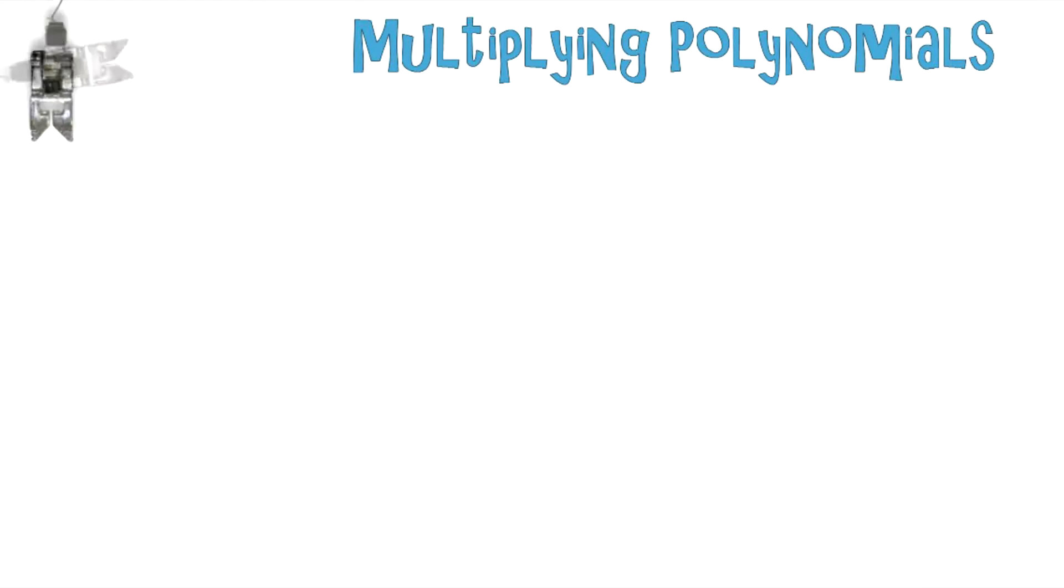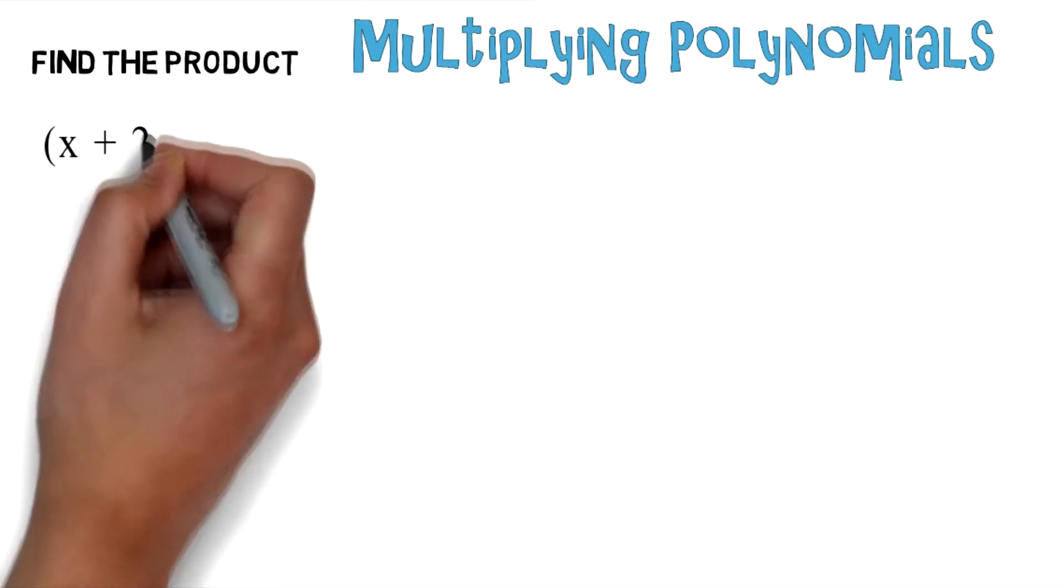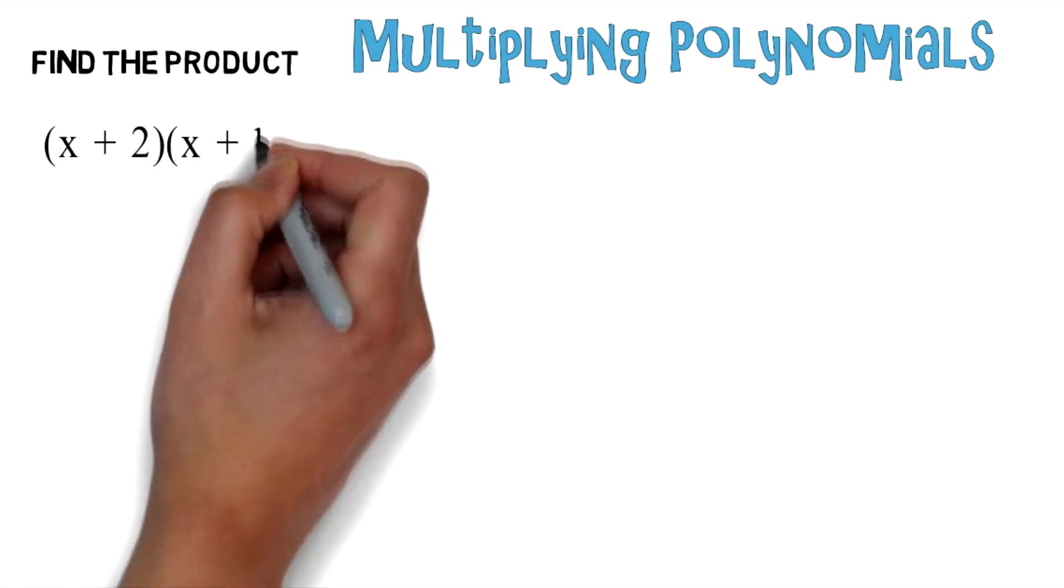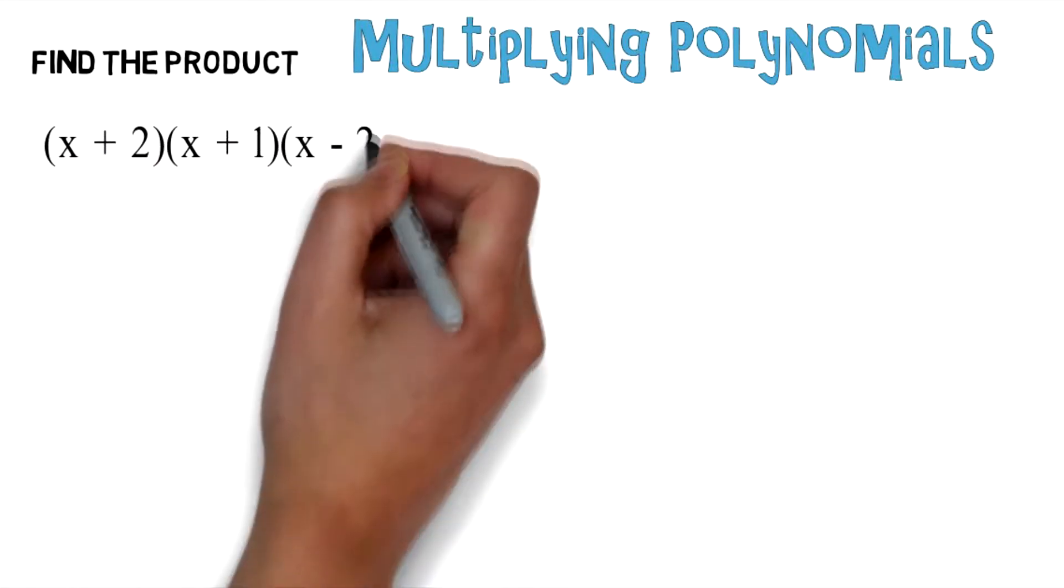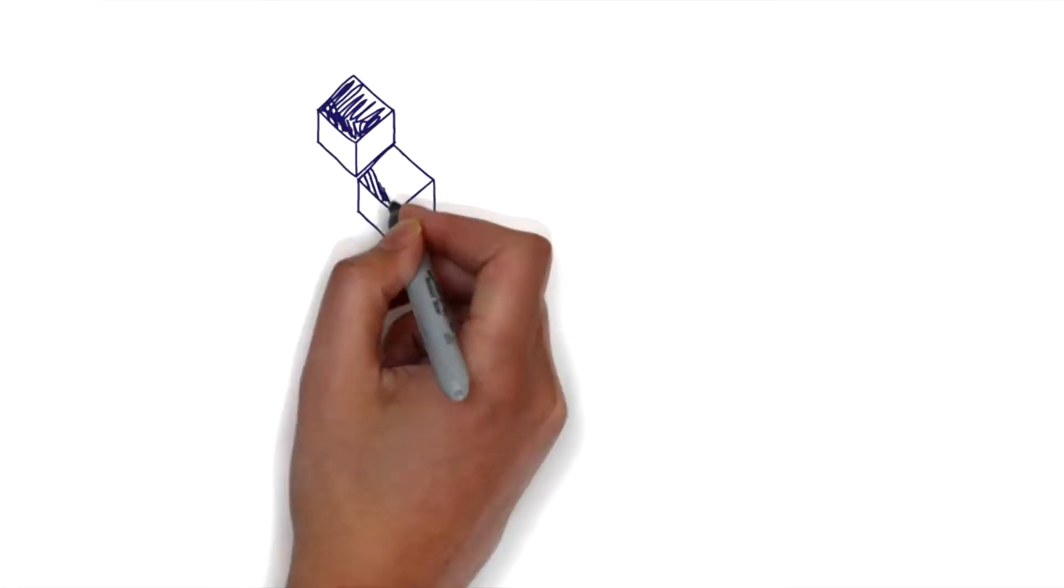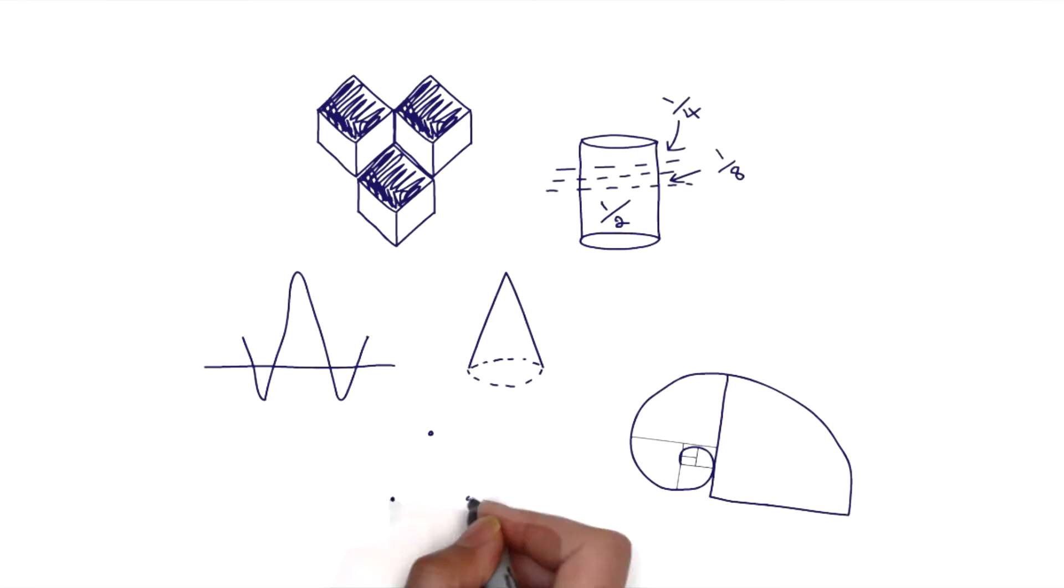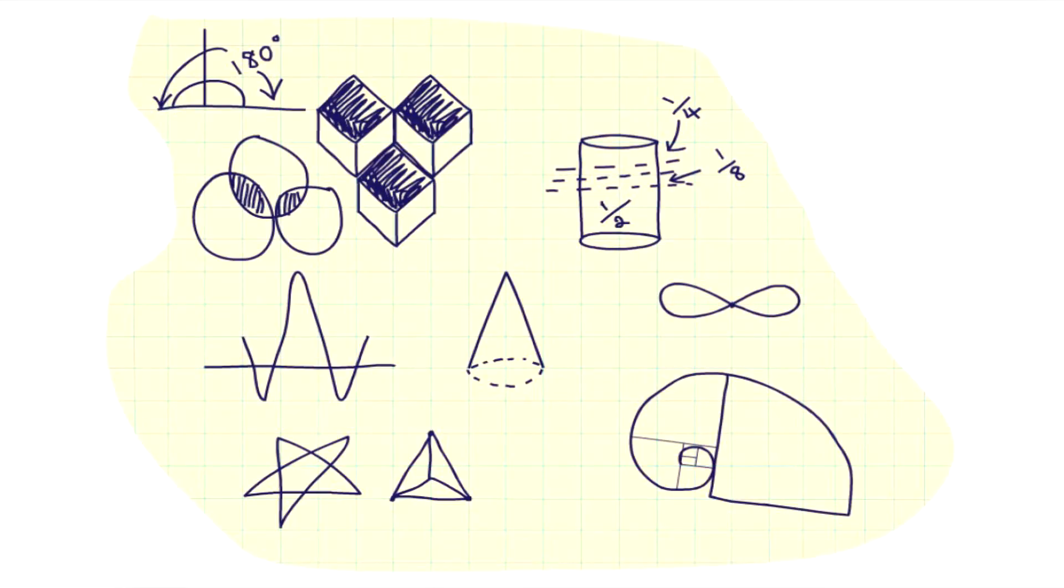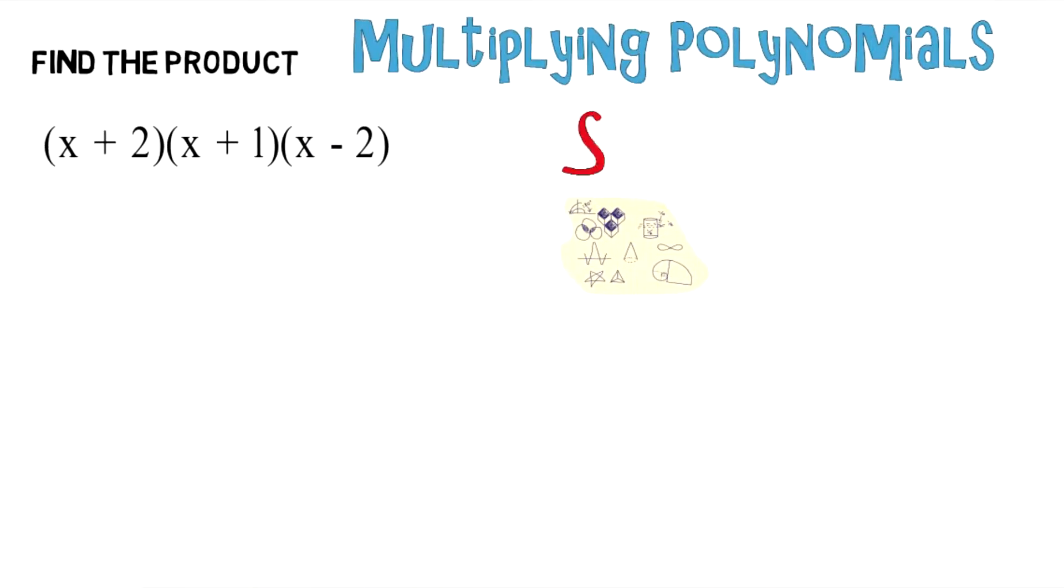Multiplying polynomials - find the product: (x + 2)(x + 1)(x - 2). I'd like you to take a second right now and try to work out this problem for yourself. Put the work in, and if you get stuck, here are a couple steps to help you along the way. The first step: multiply